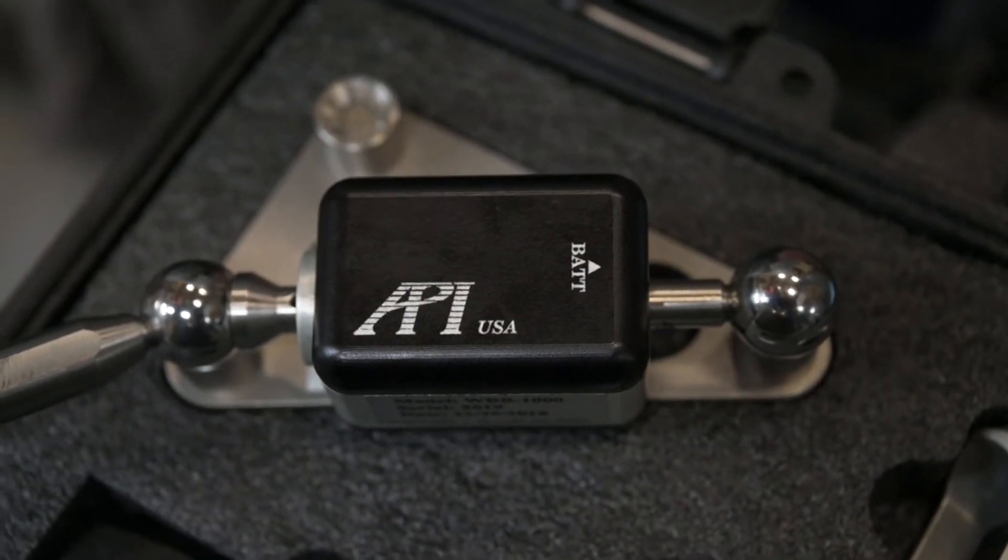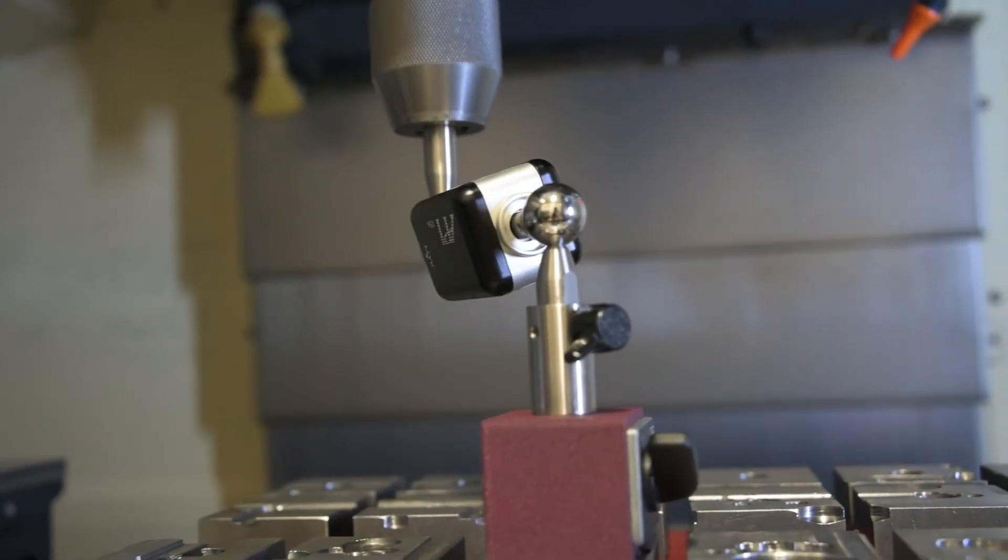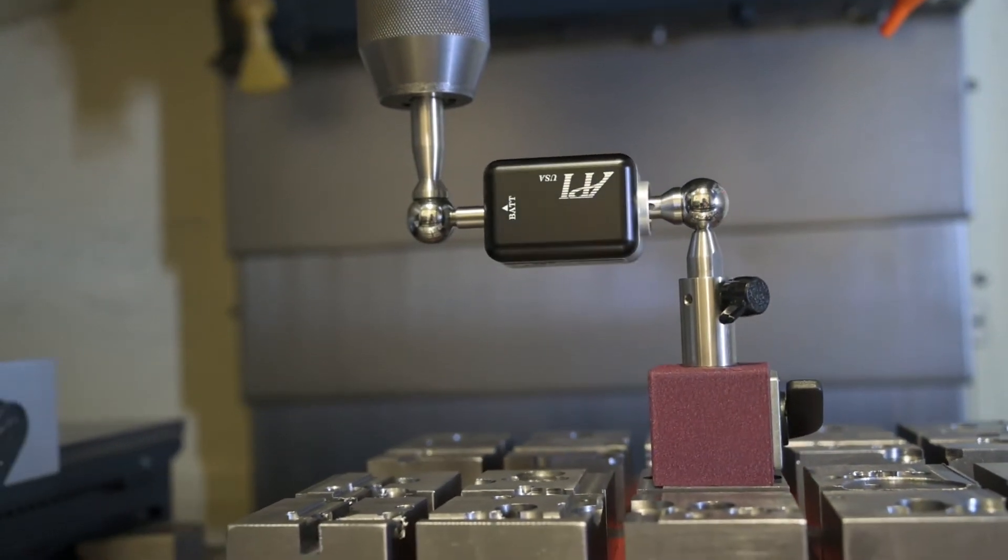The ball bar measures the circular interpolation qualities of the machine and also sees how the drives react together.